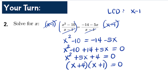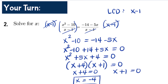Using the zero product property: x+4 = 0 or x+1 = 0, giving x = -4 or x = -1. Neither of these values makes the denominator (x-1) equal to zero, so there are no extraneous solutions.